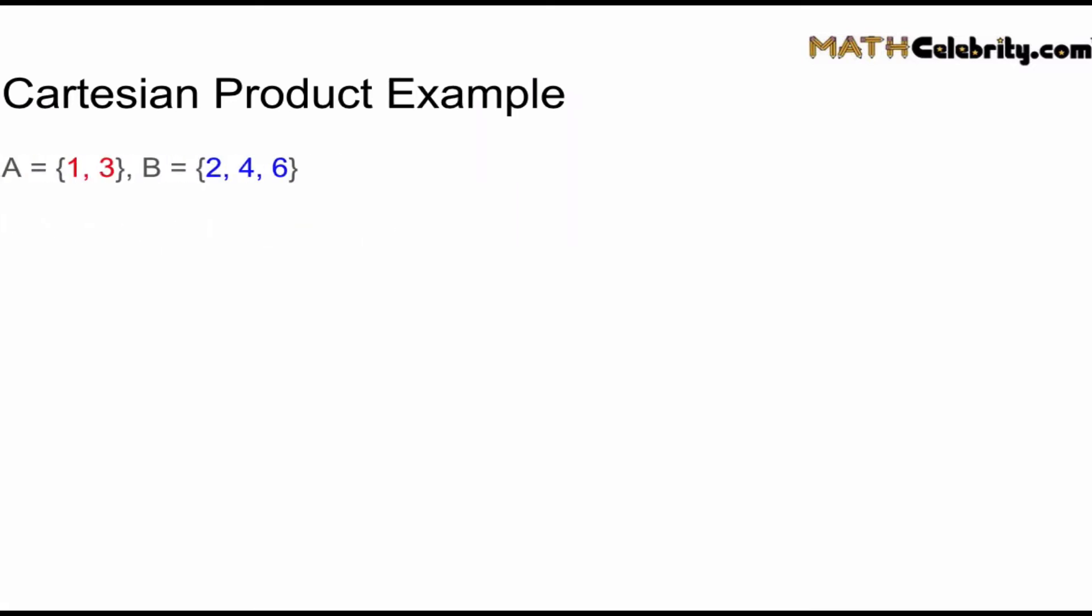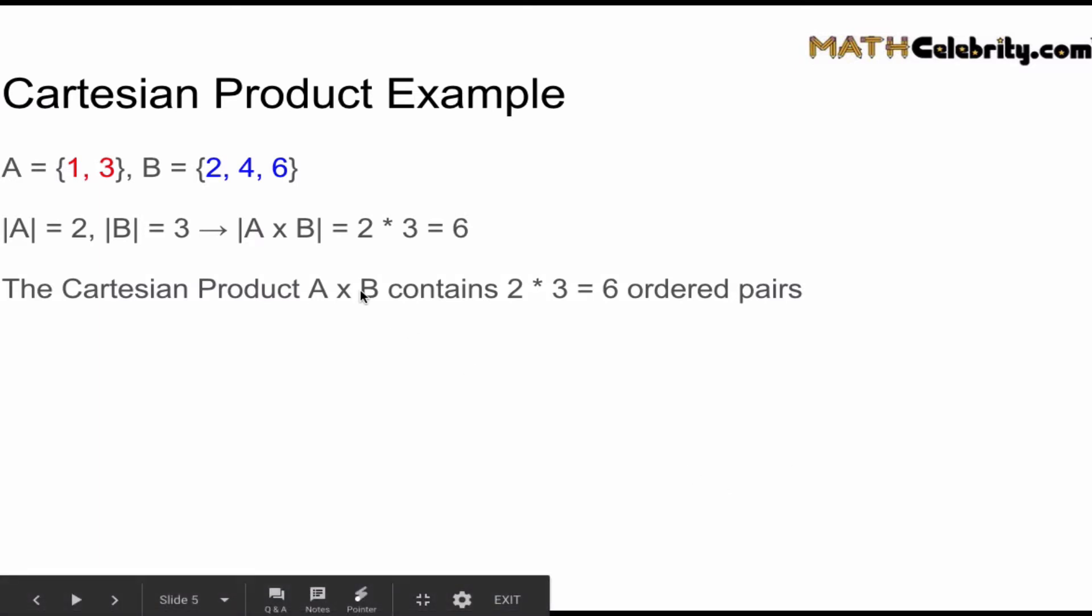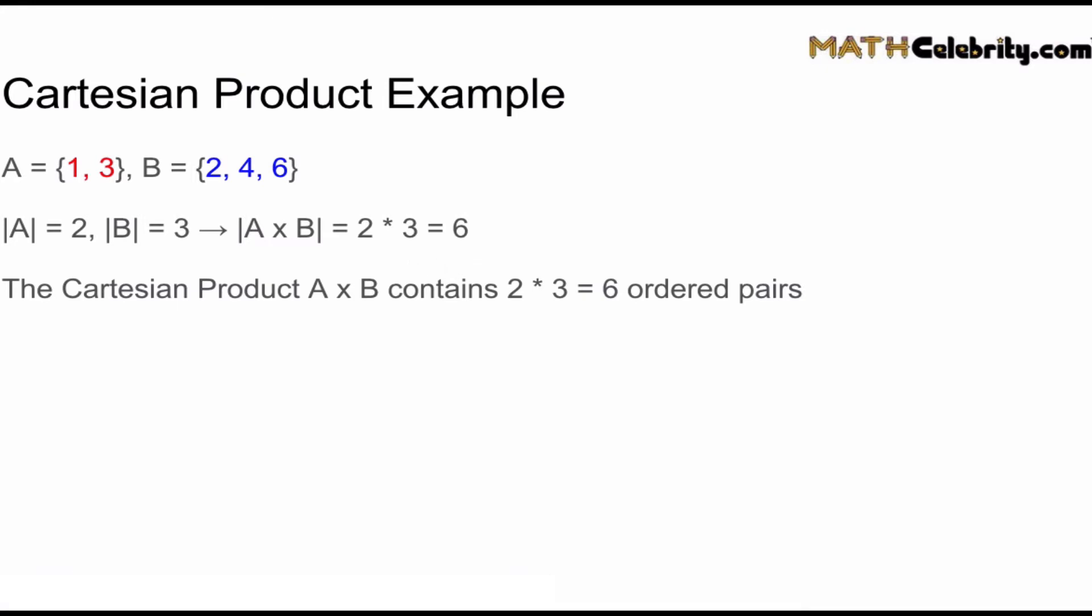Let's walk through an example now. We'll take two sets, set A and set B. Just like last time, set A has two elements, 1 and 3. Set B has three elements, 2, 4, and 6. So we would expect the cardinality of the Cartesian product to have 2 × 3 = 6 ordered pairs.